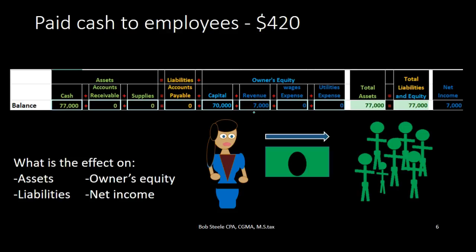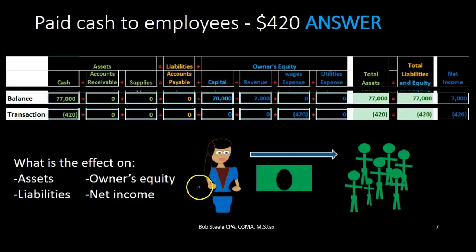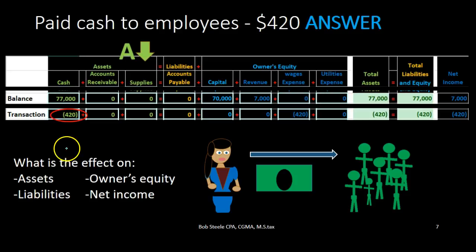Now this is the transaction we're going to record, and it will impact two accounts. The first question I ask is whether cash is affected. We can see that cash is involved in this transaction through the image here. Cash is going down — the owner is paying out, so cash decreases. Cash is an asset, so the asset side of the equation will go down. The other account affected is wages expense.